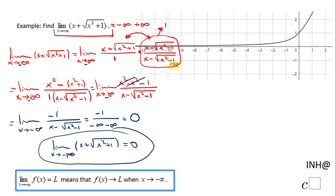You can notice in the picture that as x gets smaller and smaller approaching negative infinity, the graph of x plus square root of x squared plus 1 gets closer and closer to the x-axis, which is y equals 0.